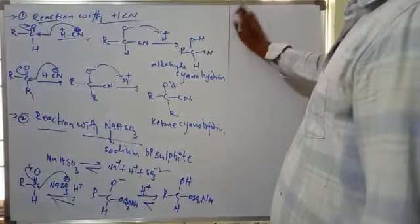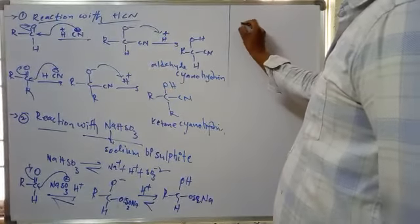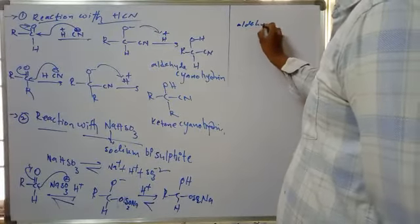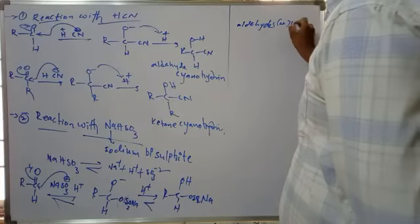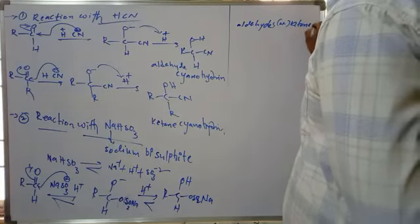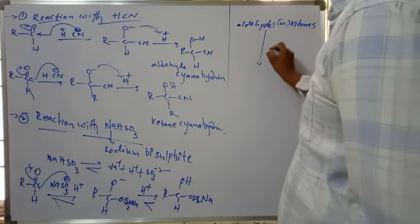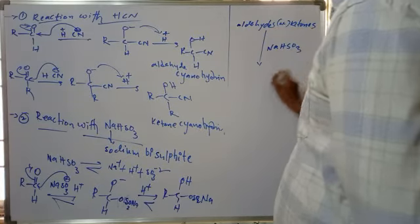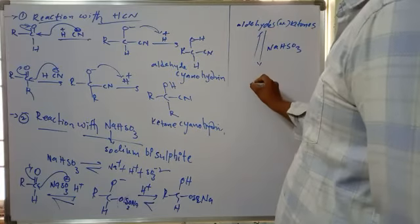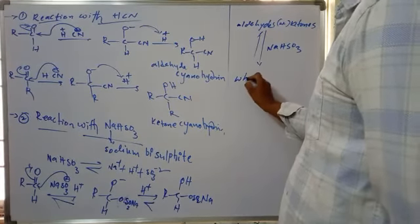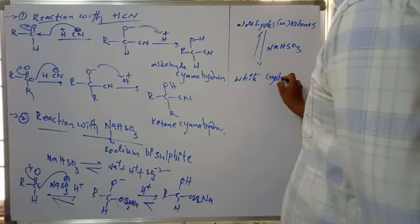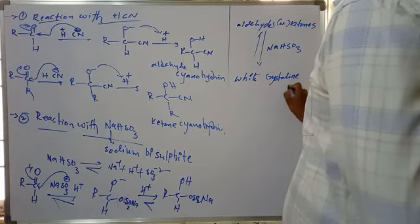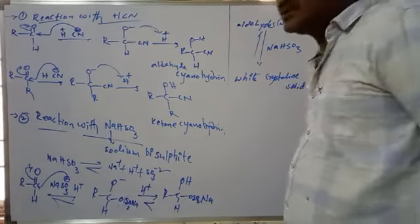Ketones react the same way. Both aldehydes and ketones react with sodium bisulphite in a reversible reaction to form white crystalline solids. For ketone: R2C=O reacts with sodium bisulphite to give R2C(OH)(OSO2Na), also a white crystalline solid.